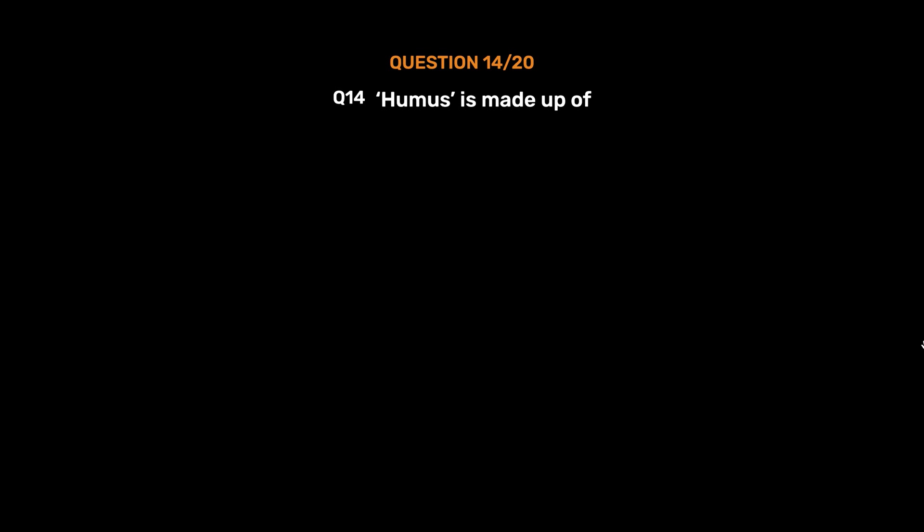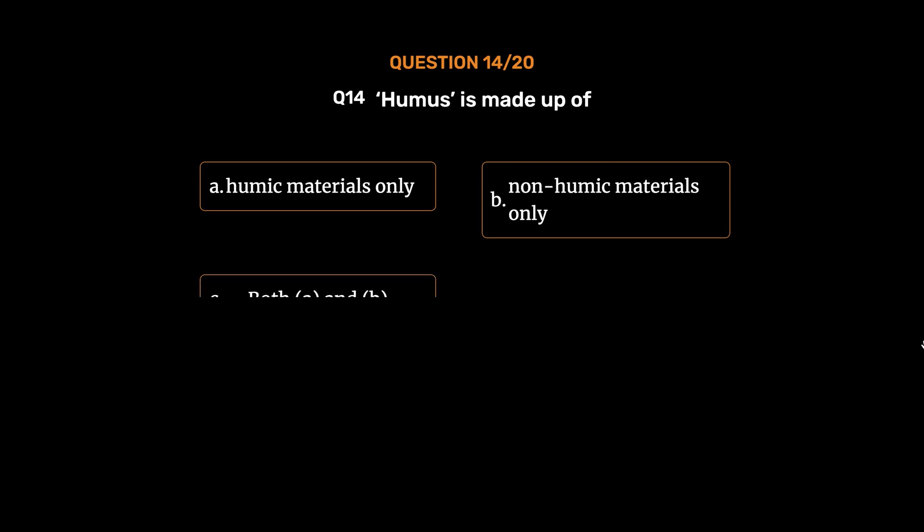Question number 14. Humus is made up of: option A, Humic materials only; option B, Non-humic materials only; option C, Both A and B; option D, None of these. The correct answer is option C, Both A and B.